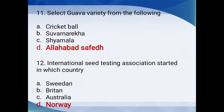Select the guava variety from the following: Cricket Ball, Suvarnarika, Shyamala, Allahabad Safeda. The answer is Allahabad Safeda — the famous guava variety. Cricket Ball is also a guava variety, and Shyamala is a brinjal variety.